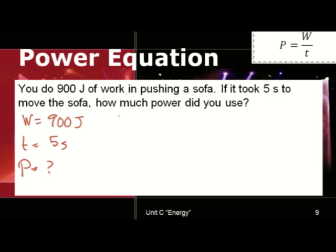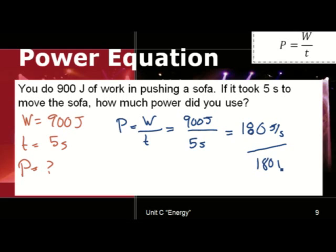Next, it's important to write out our equation. Power is equal to work divided by time. Let's substitute in our variables. Work is 900 joules. And time is five seconds. We take 900 divided by five and we get 180. It would be joules per second, or 180 watts.